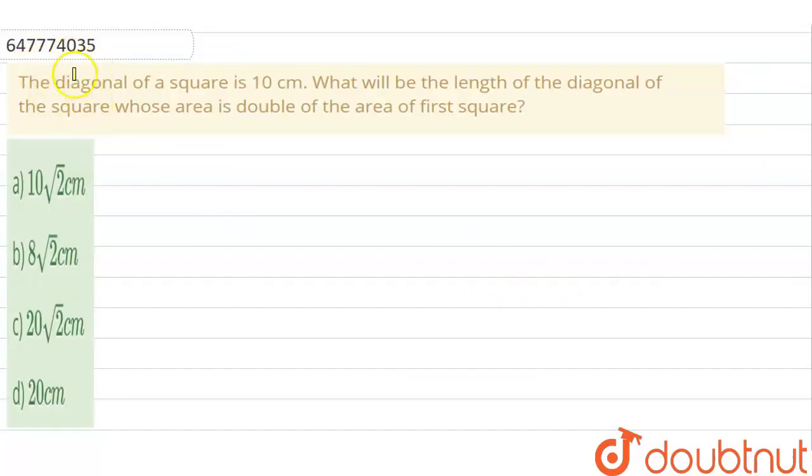Hello students, so here is the question: the diagonal of a square is 10 cm. What will be the length of the diagonal of the square whose area is double of the area of the first square?